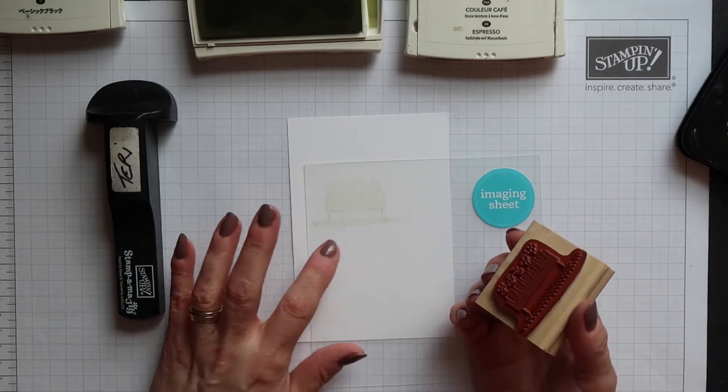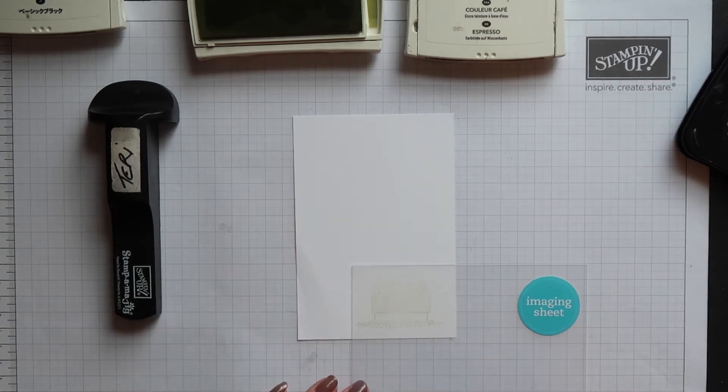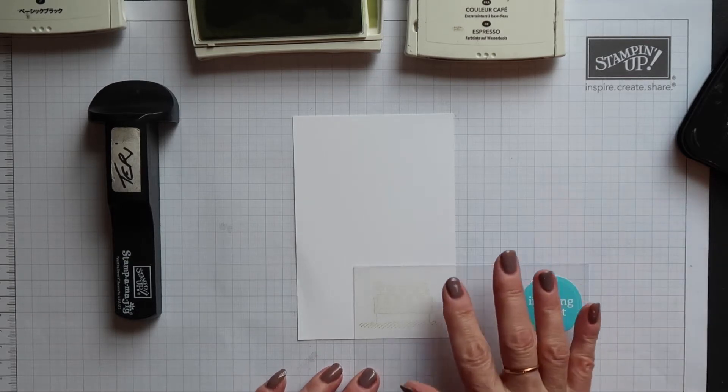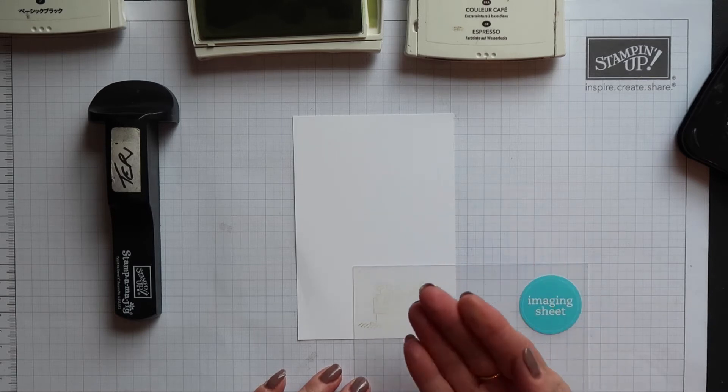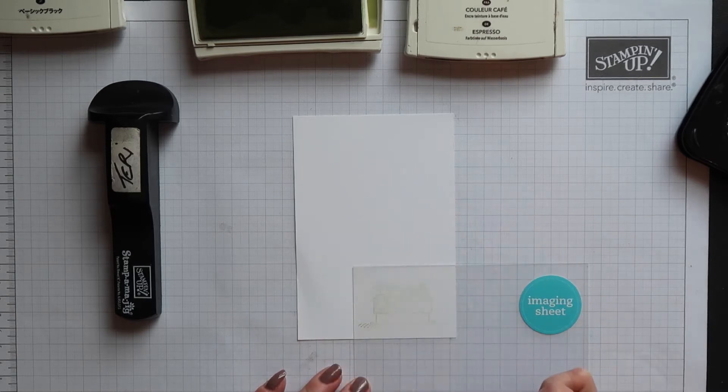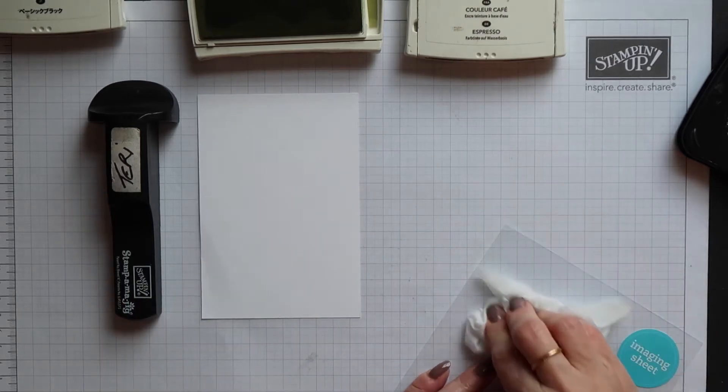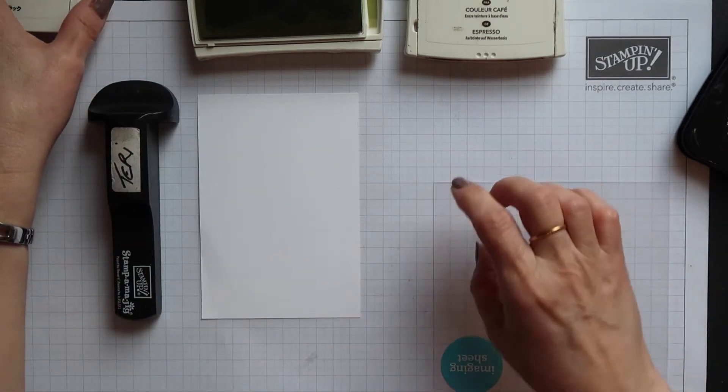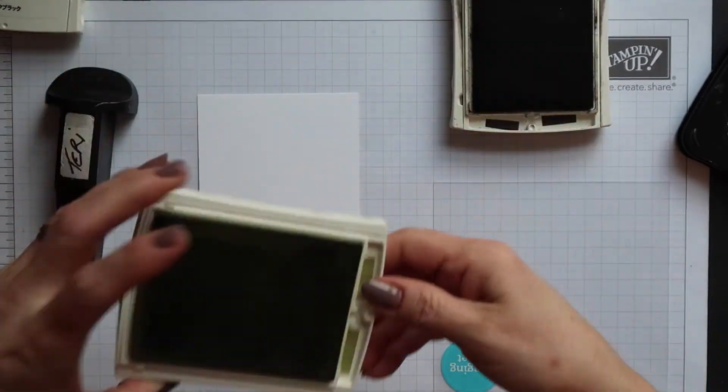Now because I've used Pear Pizzazz ink you can hardly see the image so I'm just showing you that if you choose a light coloured ink you might find it difficult to see on the plastic. Now with dye based inks they will rub off the plastic so you have to be careful because if you get the ink on your fingers that can transfer to your project. Now if you've used a dye based ink to remove it from your imaging sheet you can just use a damp cloth or a wet wipe.